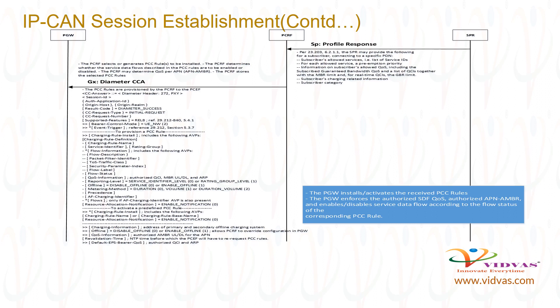PCRF sends a Diameter CCA message to PGW over the GX interface. After receiving the Diameter CCA message from PCRF, PGW installs or activates the received PCC rules. The PGW enforces the authorized SDF QoS, authorized APN AMBR, and enables or disables service data flow according to the flow status of the corresponding PCC rule.